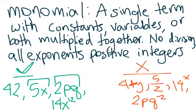Or 14x to the 12th. These are not examples of monomials. 4 plus y, because that involves addition of a constant and a variable, 5 over z is not a monomial because there's division involved.